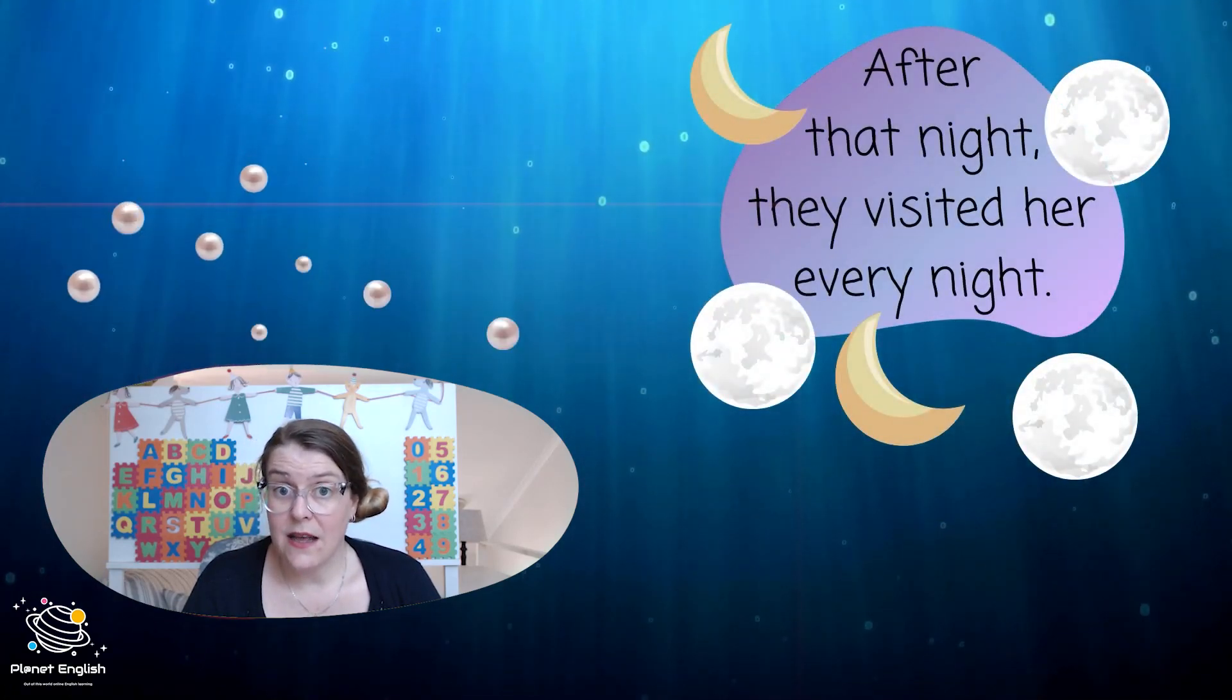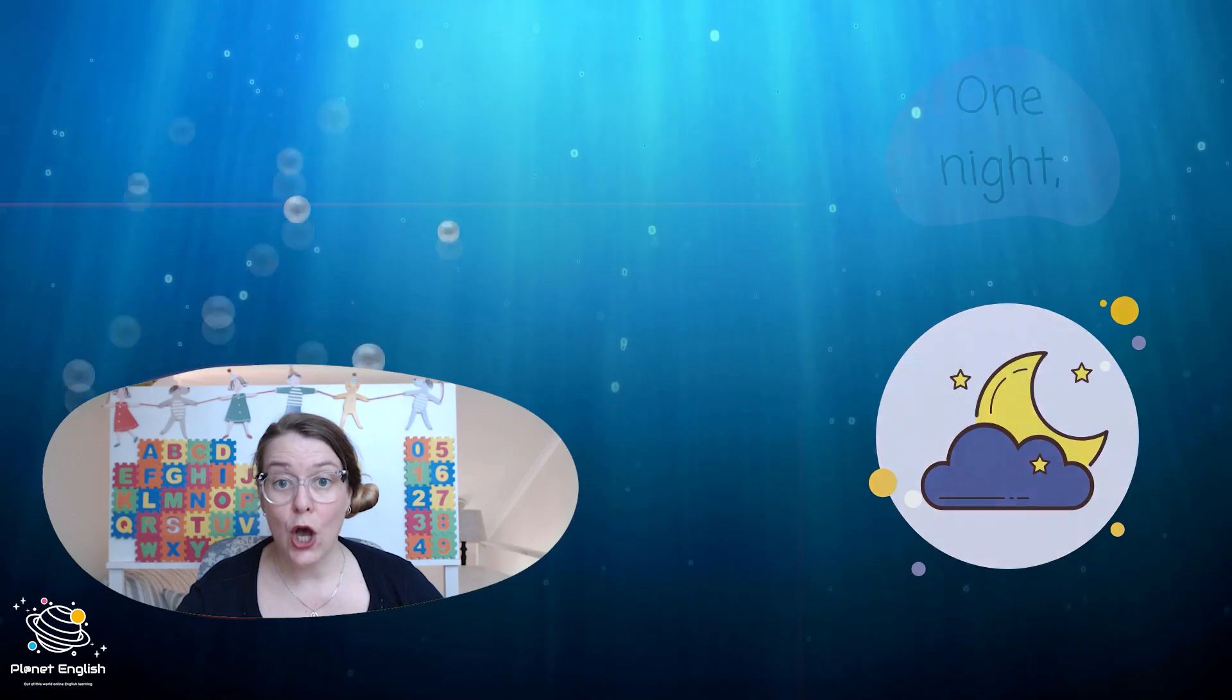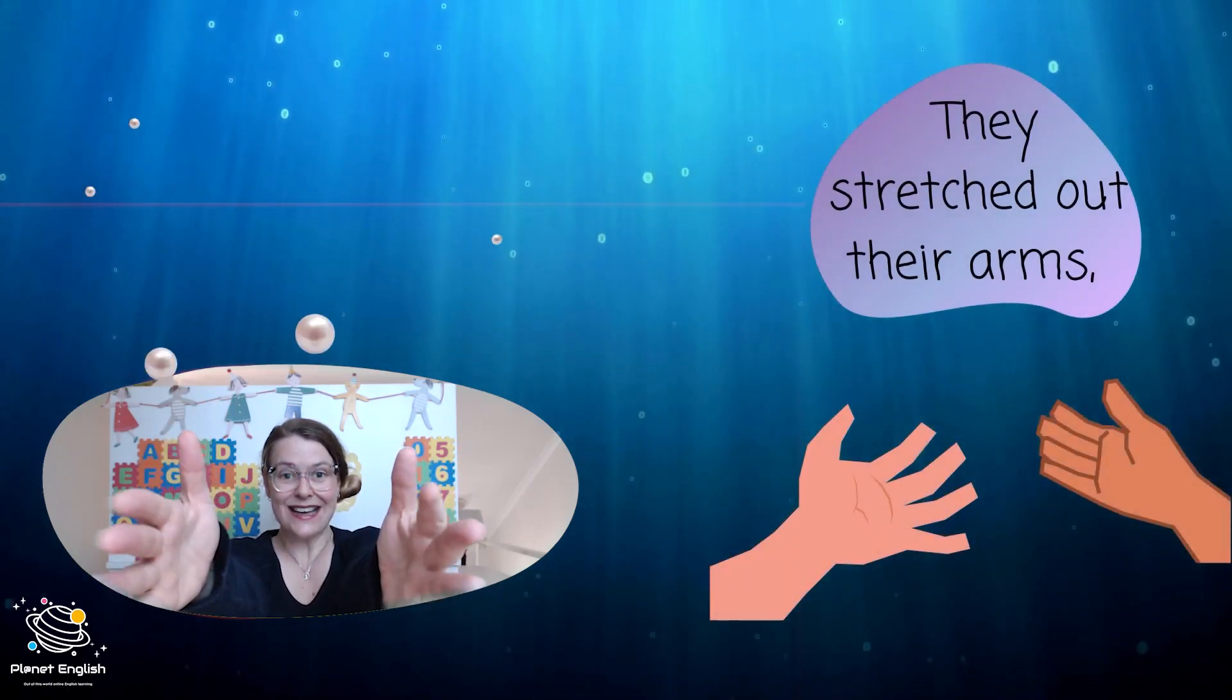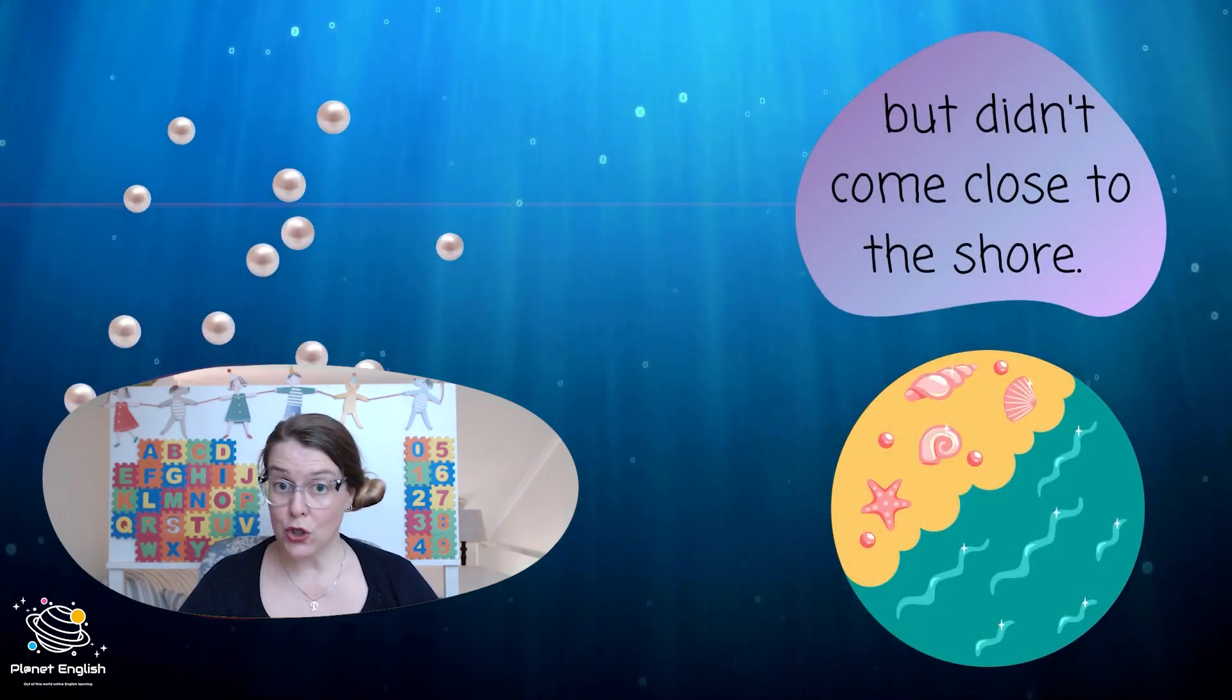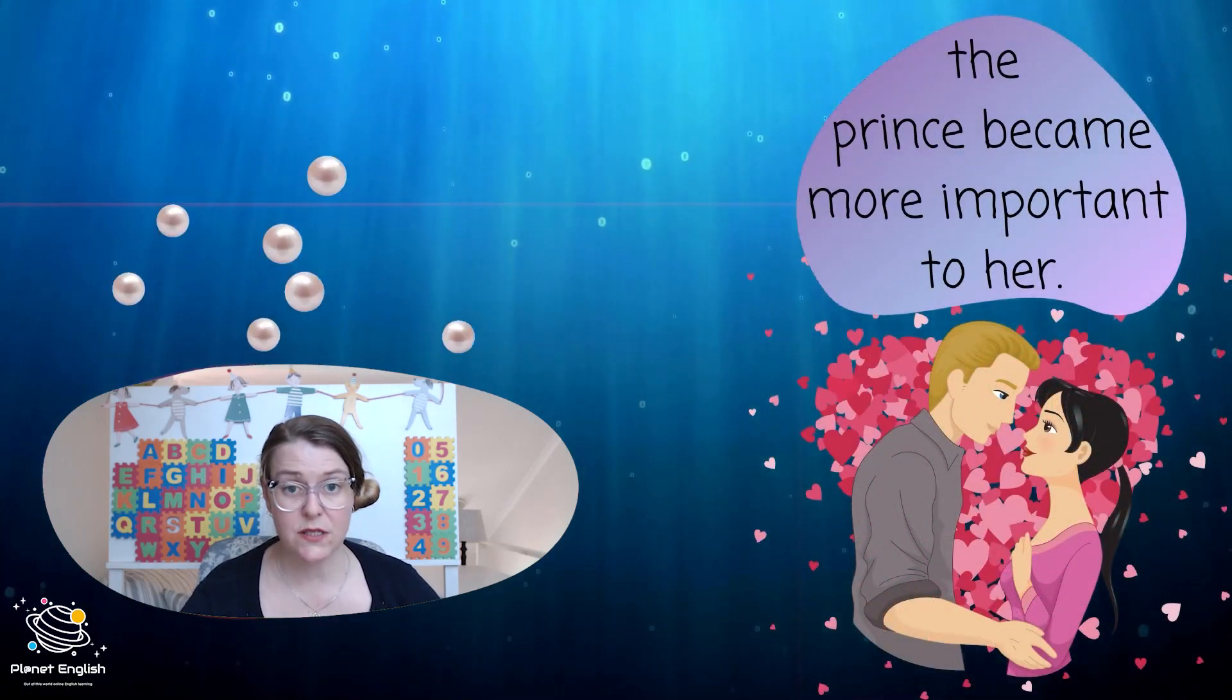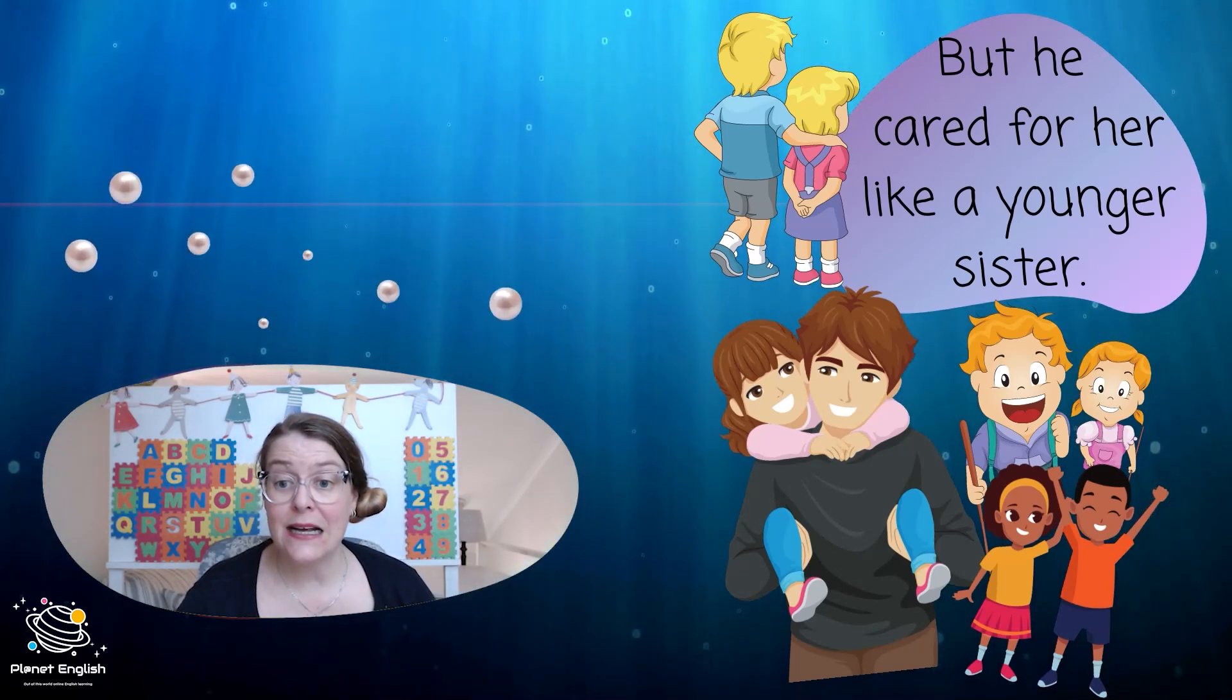After that night, they visited her every night. One night, her grandmother and father came to the surface to see her. They stretched out their arms but didn't come close to the shore. As the days passed, the prince became more important to her, but he cared for her like a younger sister.